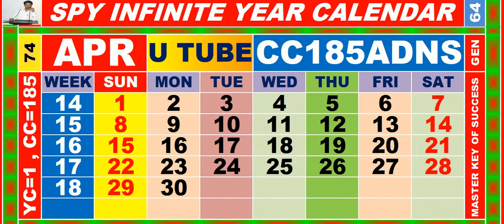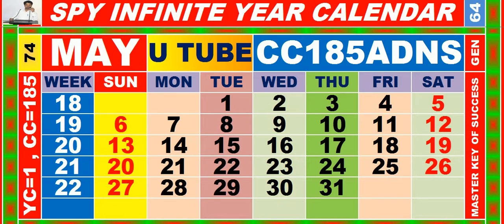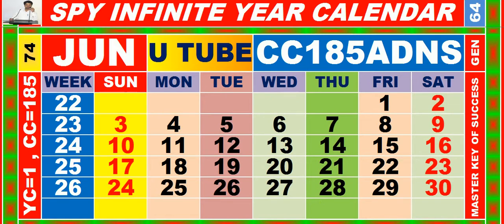Calendar for the month of April having calendar code equal to 185. Calendar for the month of May having calendar code equal to 185. Calendar for the month of June having calendar code equal to 185.